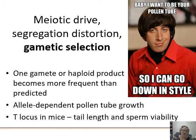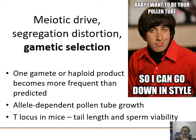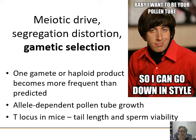Another type of selection is meiotic drive — also called segregation distortion or gametic selection. Specifically, a gamete or haploid product becomes more frequent than expected. Some sperm literally do better than others; some eggs literally do better. Selection occurs at the gamete level. For example, there's an allele in plants that really helps pollen tube growth — without it, you're probably not getting passed on. In mice, a locus determines tail length and pleiotropically affects sperm viability, making those alleles more likely to be transmitted.